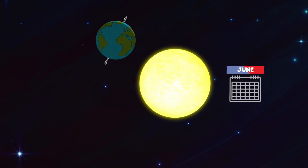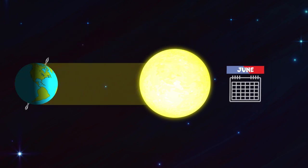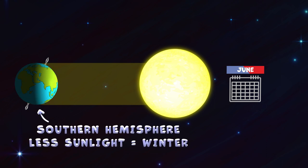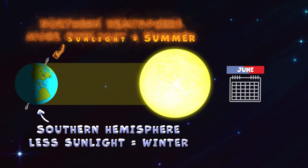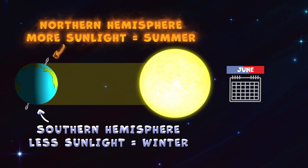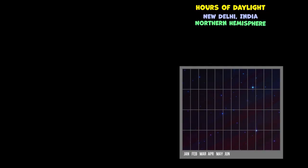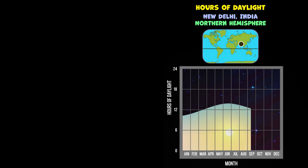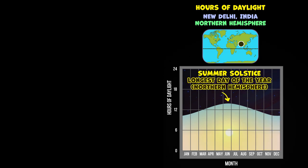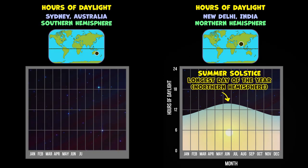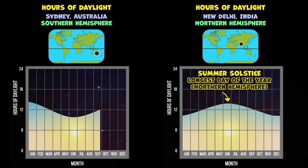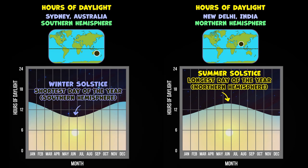Six months later, in June, the Earth is at the opposite end of its orbit, and the Southern Hemisphere is now tilted away from the Sun, making it winter in the South. And you guessed it, the Northern Hemisphere is tilted towards the Sun and experiencing summer. June also brings the summer solstice, the day with the most sunlight, to the North, and the winter solstice, the day with the least sunlight, to the Southern Hemisphere.